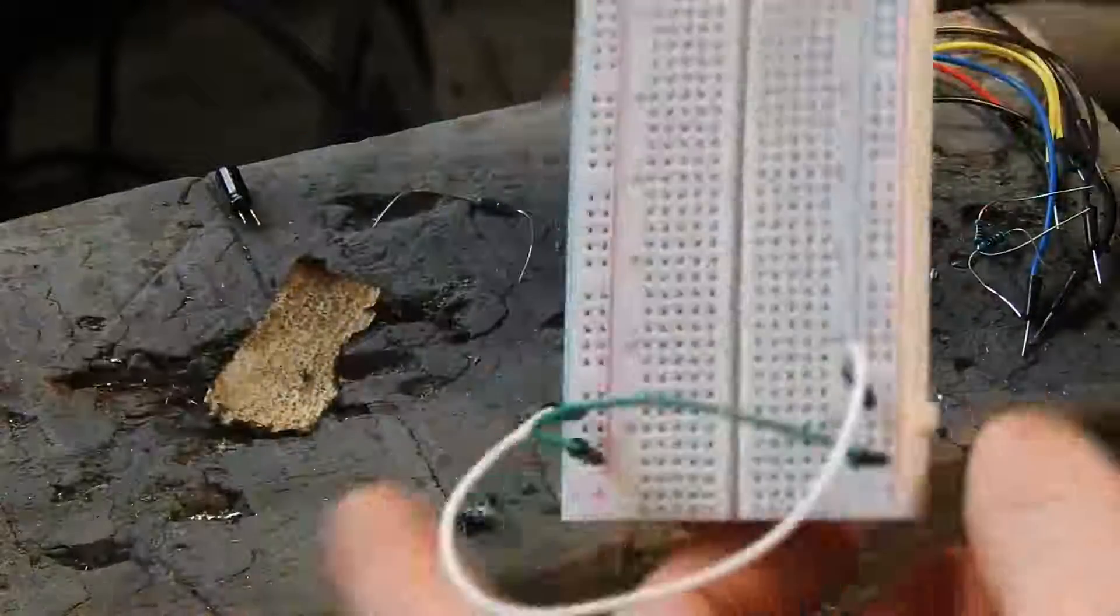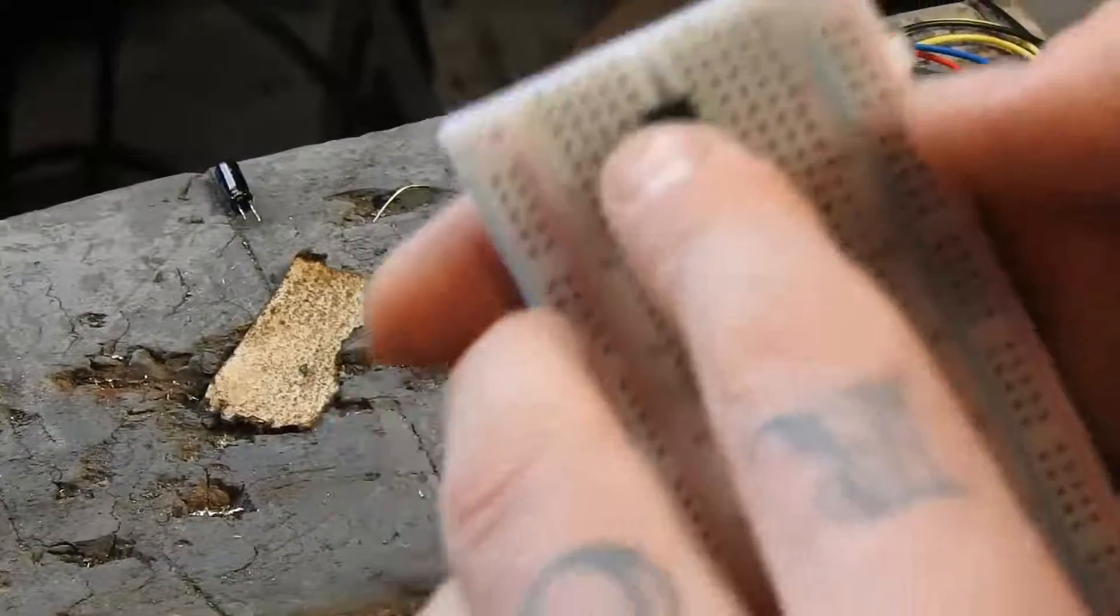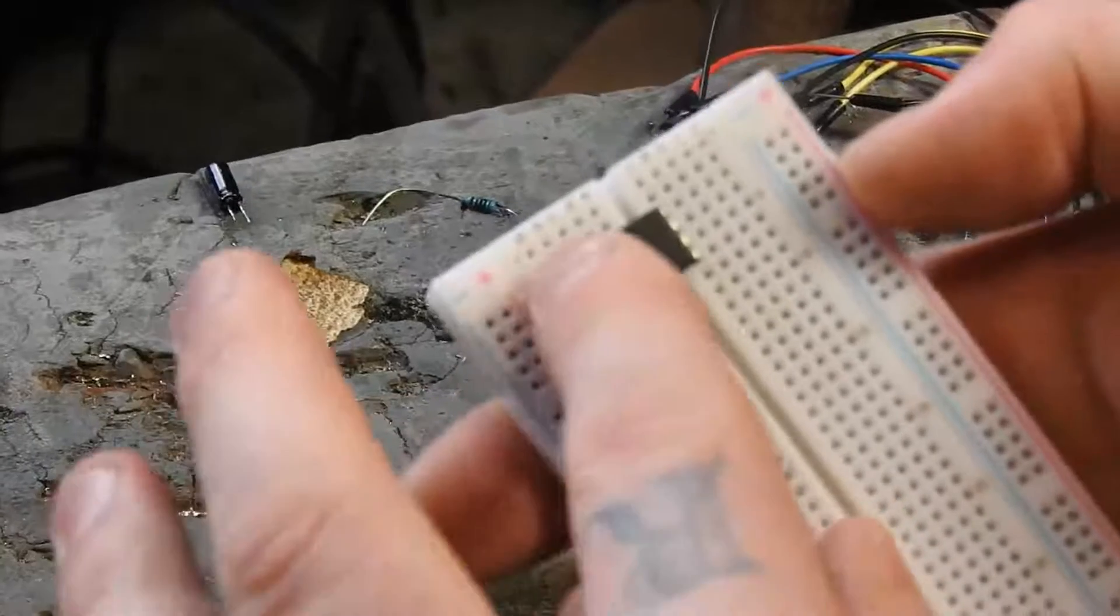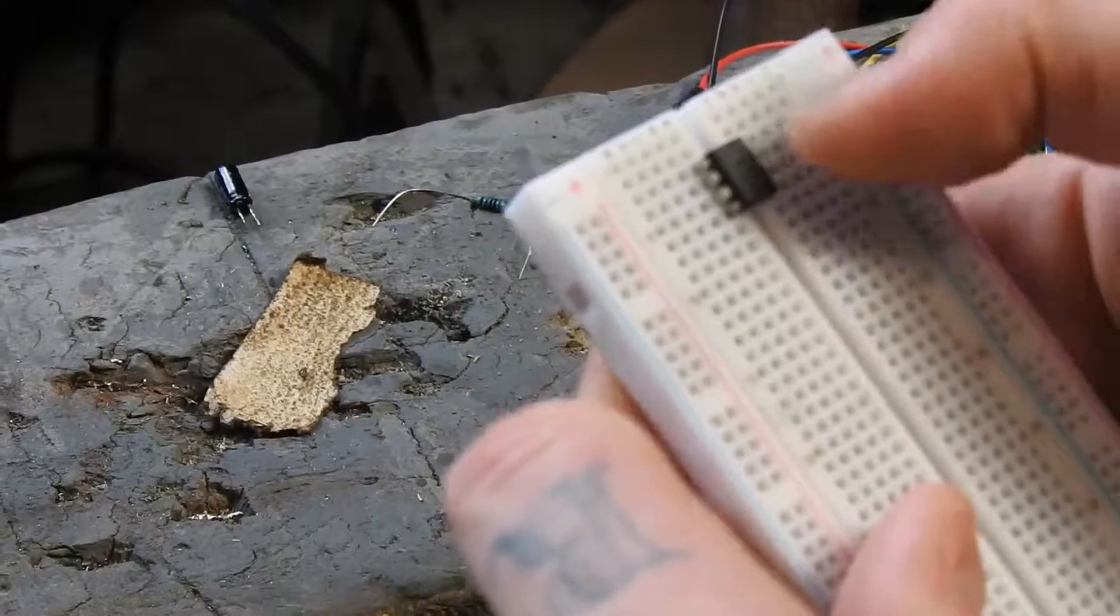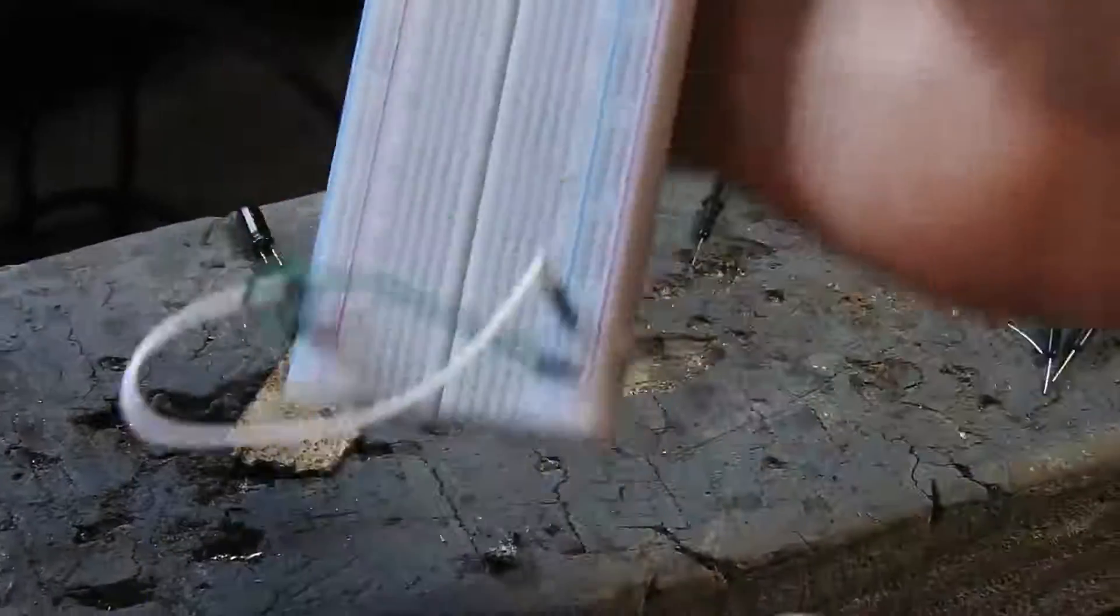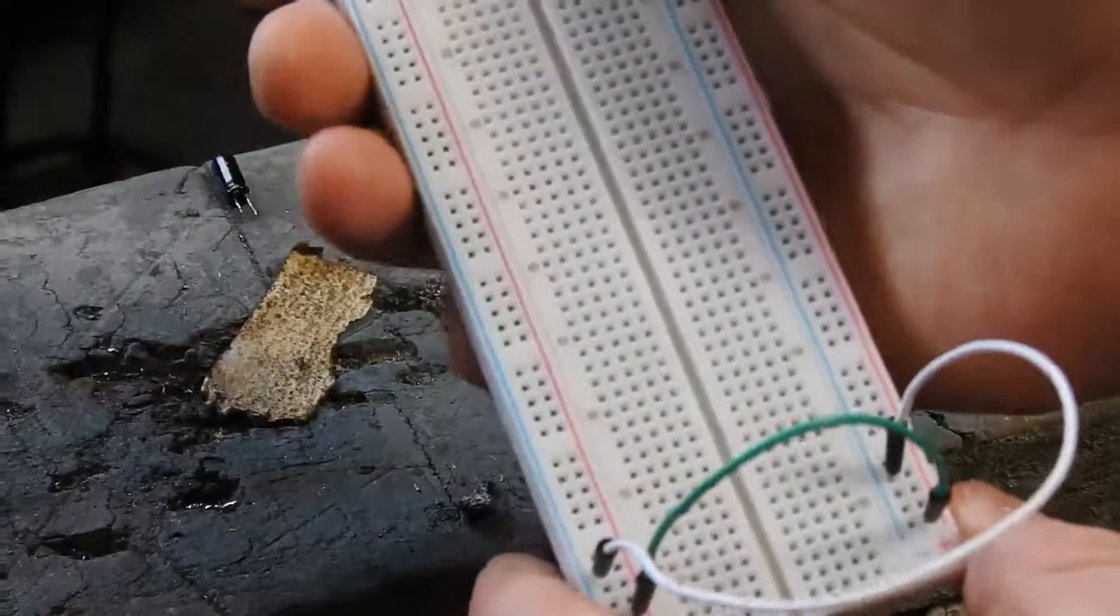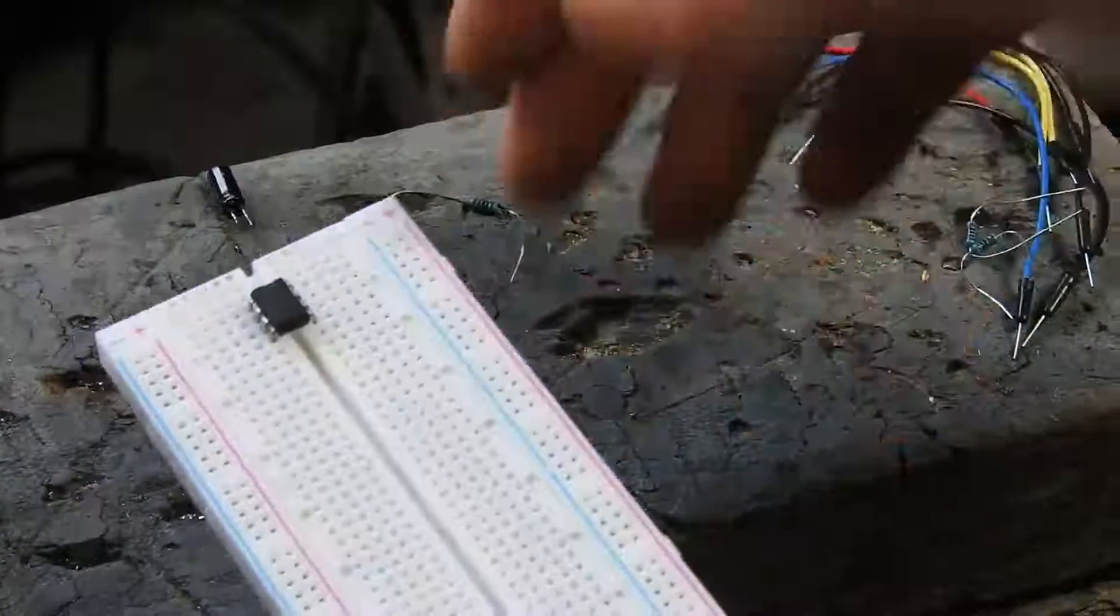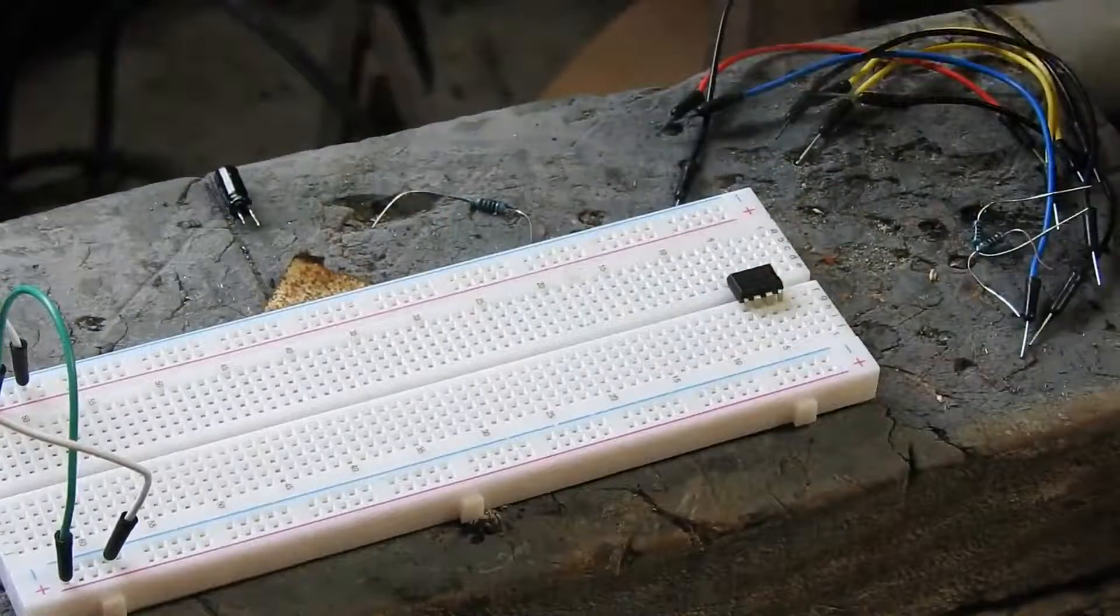This is a 555 chip. There's a dot, a groove, probably can't see it but if you have one yourself you'll see it. And so to the side of that, number one pin is there, two, three, four, five, six, seven, eight. And I've got the positive and negative sides connected because some of the wires are probably gonna come from this side and some to that side.